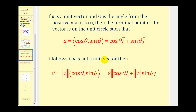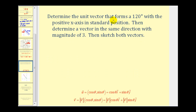If v is not a unit vector, as long as you know the magnitude of v, you can determine the component form by taking the magnitude of vector v and multiplying it by (cosine theta, sine theta), or expressing it as a sum of vectors i and j. Let's try an example: determine the unit vector that forms a 120-degree angle with the positive x-axis in standard position, then determine a vector in the same direction with magnitude three, and sketch both vectors.